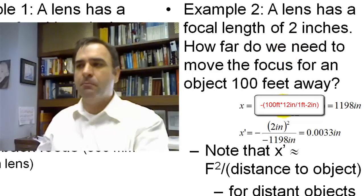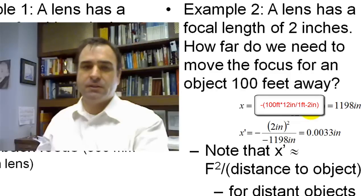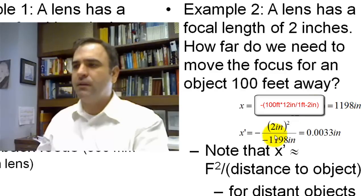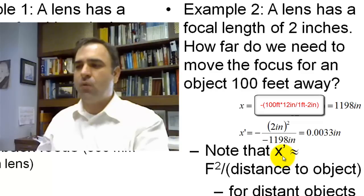So I'm going to go through this by the numbers. Your image distance equals negative, 100 feet minus 2 inches, because it's measured from the front focus. We could ignore this part, this is tiny compared to the overall length. But your object distance is 2 inches, quantity squared, divided by your object distance, and it's 3.3 thousandths of an inch from focus. And I want to reiterate, the object distance for a very distant object is roughly the focal length squared divided by the distance to the object.